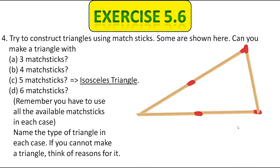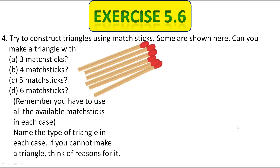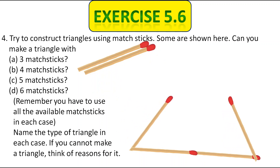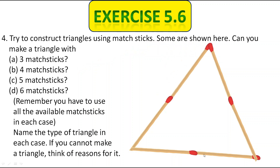Now let's use six matchsticks. We can make a triangle with six matchsticks with equal lengths — two here, two here, and two here. So this type of triangle is called an equilateral triangle. This exercise ends here. If you like my teaching, please don't forget to subscribe, and if you have any doubt you can ask me in the comment box — I'll clear it all.